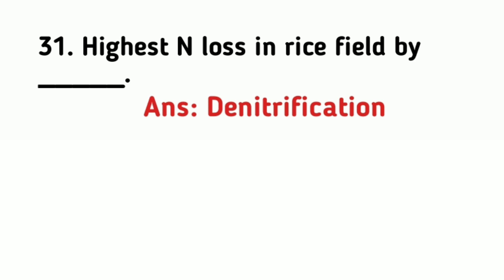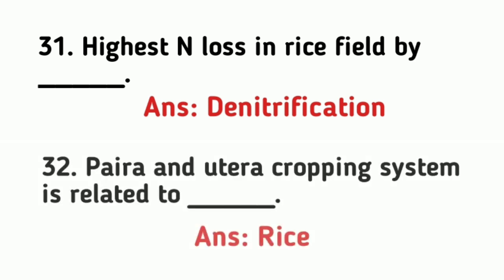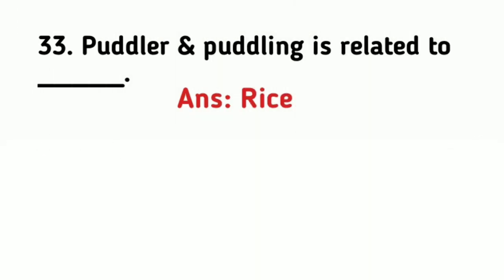The highest nitrogen loss in rice field is by denitrification. Pyra and utera cropping systems are related to rice. Puddler and puddling are also related to rice cultivation.